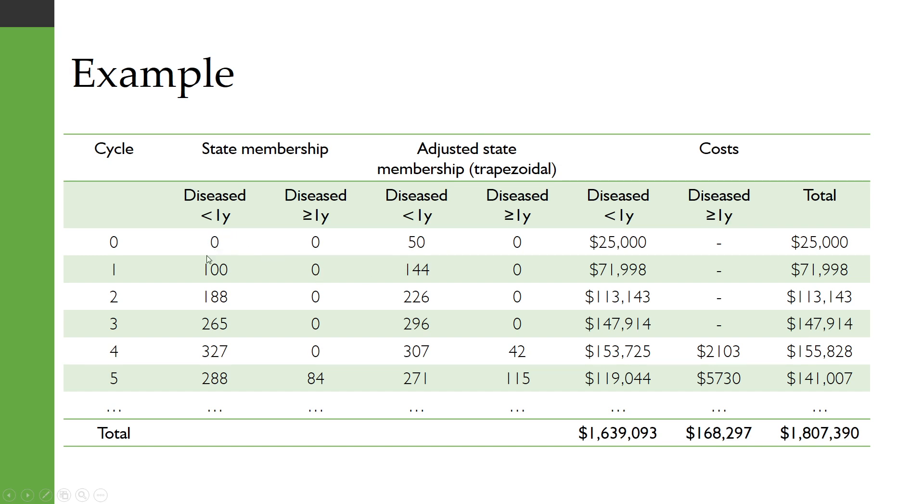So at the start of this cycle the membership was 0 but at the end of the cycle it was 100, therefore our adjusted state membership for that cycle is 50 and you'll see it's also slightly brought forward the membership of the long-term diseased state.